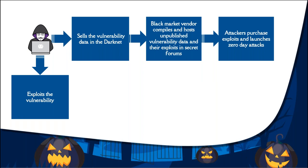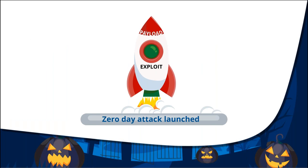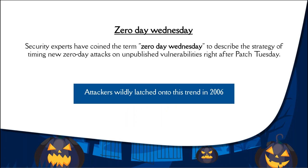These brokers are middlemen who collect and compile lists of unpublished vulnerability data and their exploits, keeping this information hidden from the public and the vendor. Highly sophisticated attackers purchase these exploits to breach their target, then incorporate the exploit in a cyberattack. Think of the exploit as a missile — it acts as a delivery system for the payload. The exploit leverages the unpublished vulnerability to breach the network and deliver the payload, which can be a Trojan, a coin miner, or other malicious code that does the actual damage.